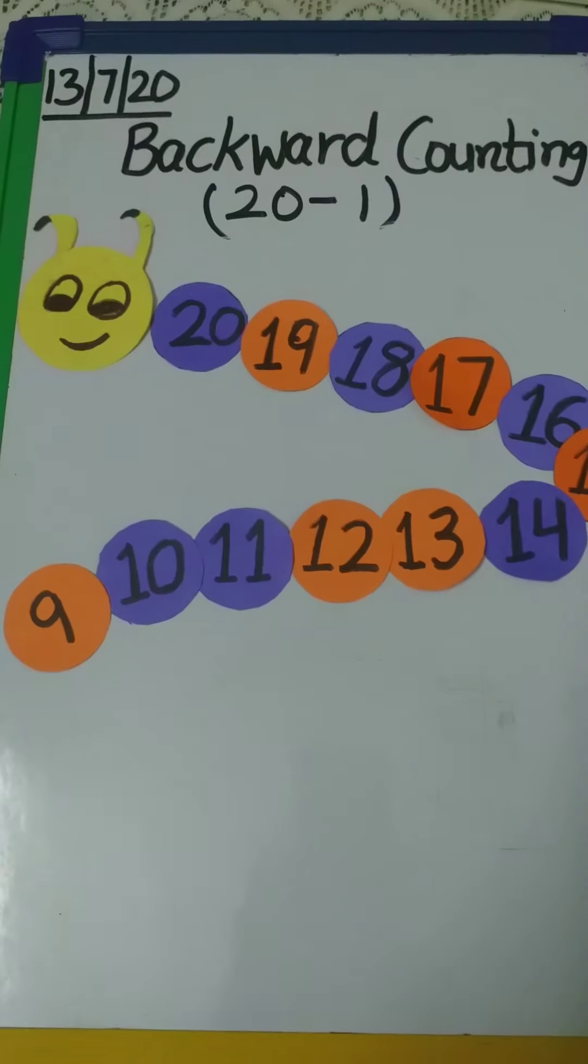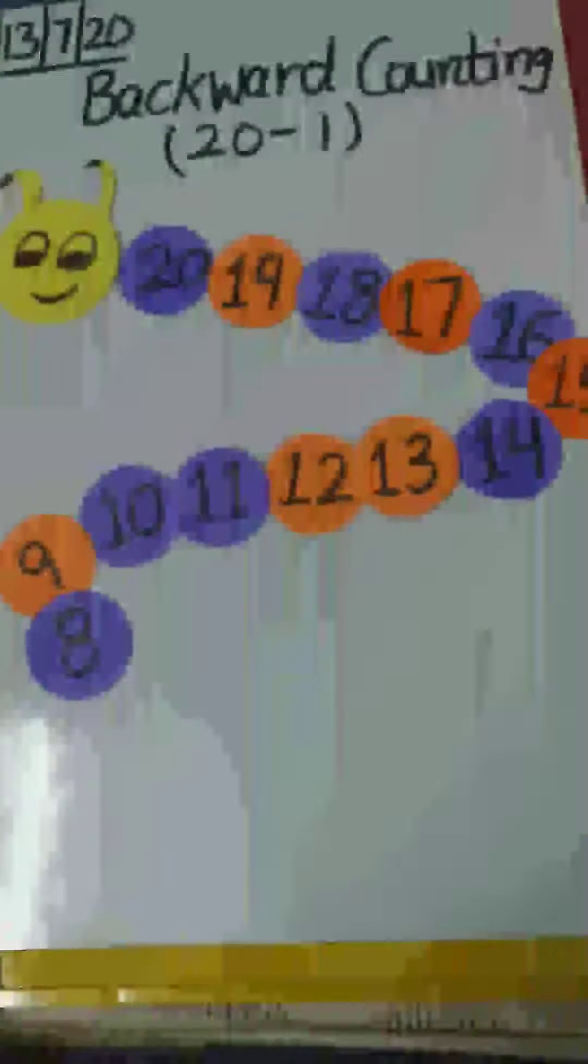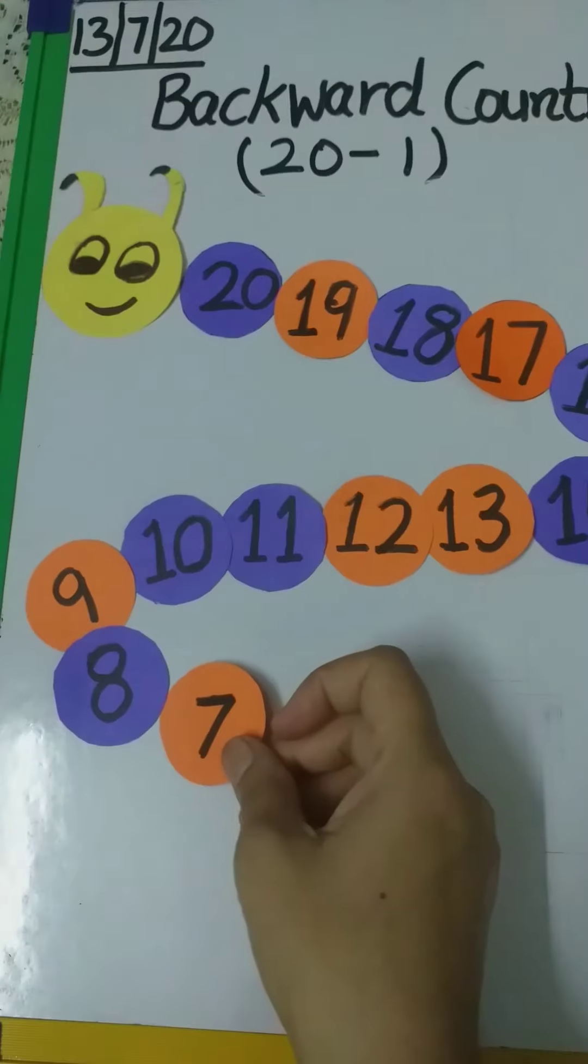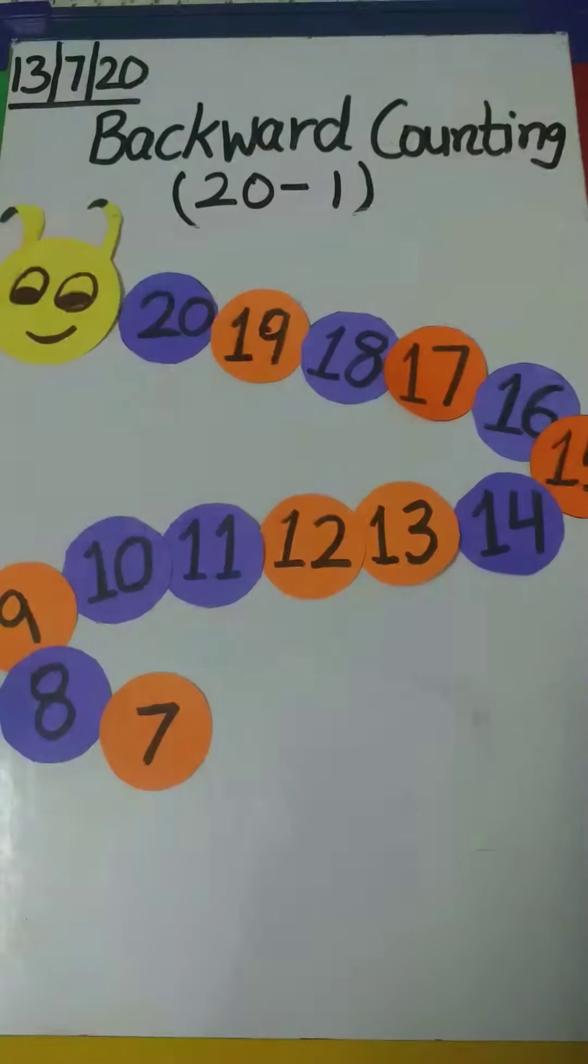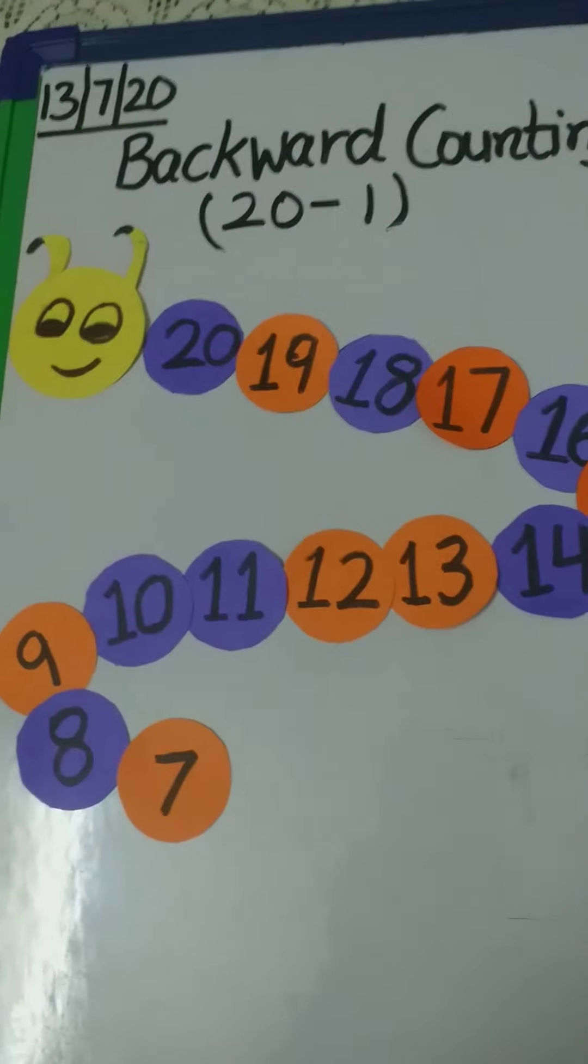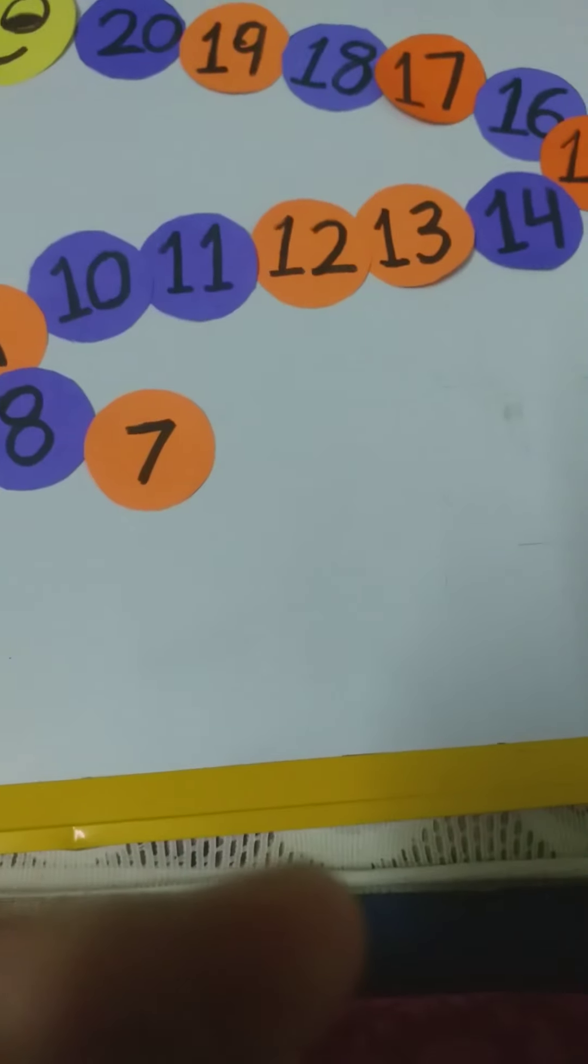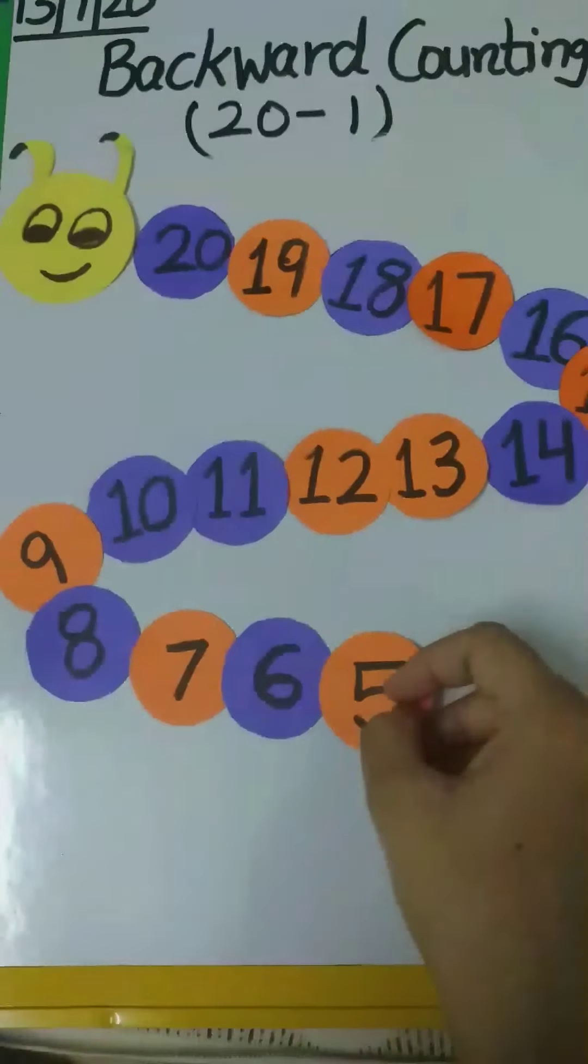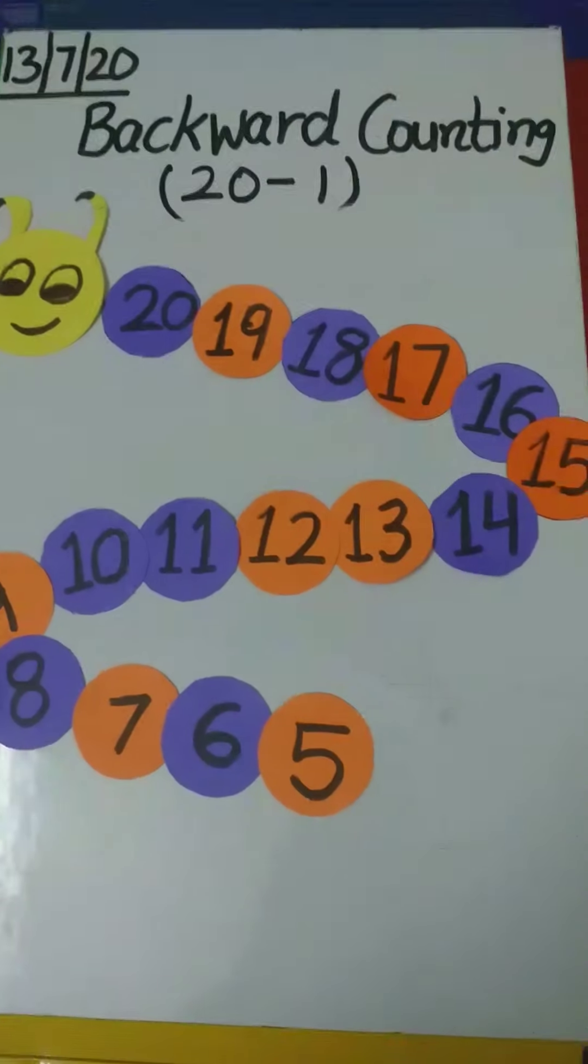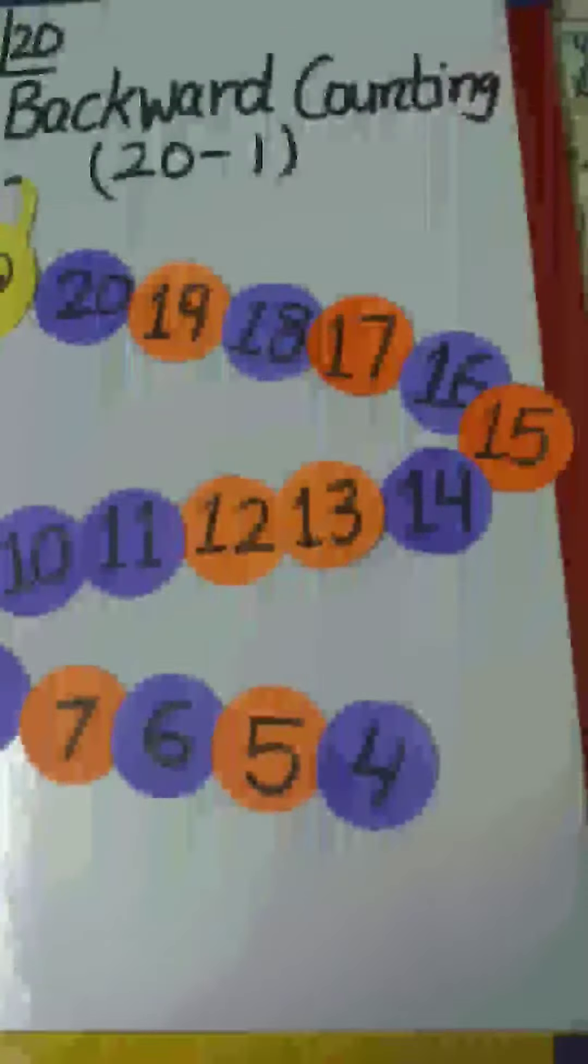Now tell me, what comes before number 9? Yes, number 8. And what comes before number 8? 7. What comes before number 7? Number 6. And what comes before number 6 is number 5. Then 4.